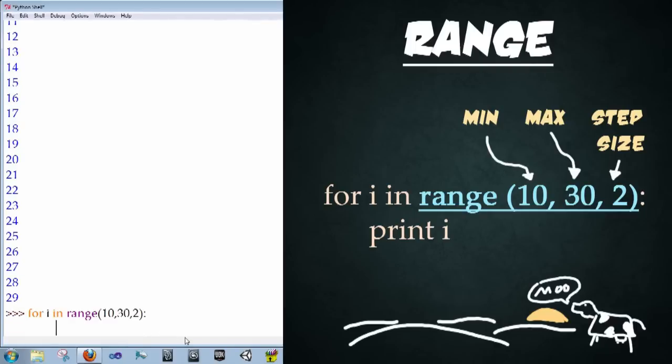and then type print i, enter, enter. And now look what happens. It goes from 10, 12, 14, only printing the even numbers because it's intervalling by 2. Perfect. That's exactly what we wanted. So as you can see, there's a lot of power in using this for loop combined with the range keyword to get very specific numbers that you want that are sequential.